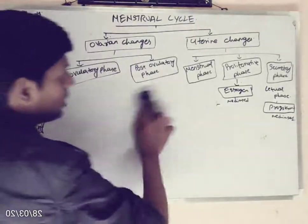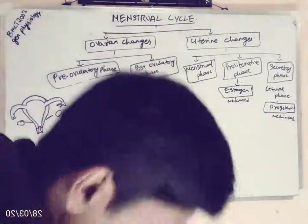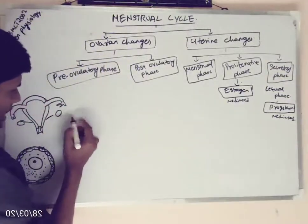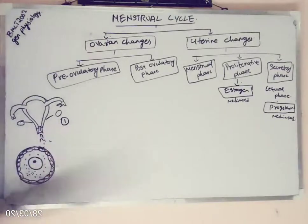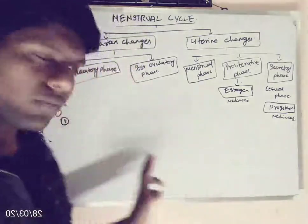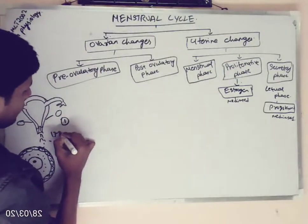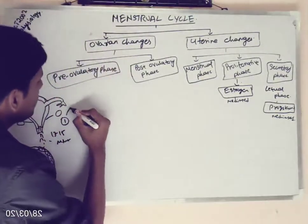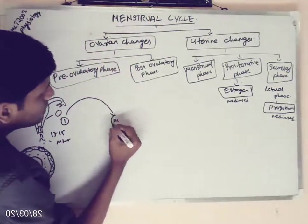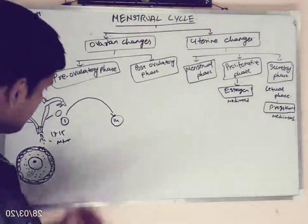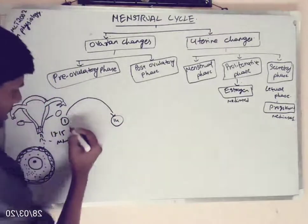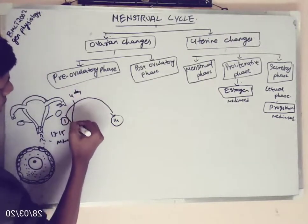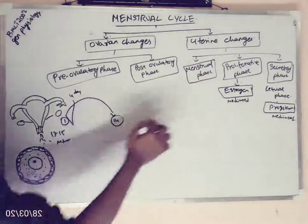Now let me discuss a few more introductory points. In the first stage, the woman bleeds — this is her period. From the first day of her period, she will be in a bleeding stage for the first 1 to 4 days, and this is called the menstrual phase.